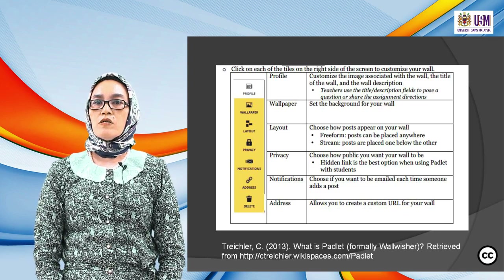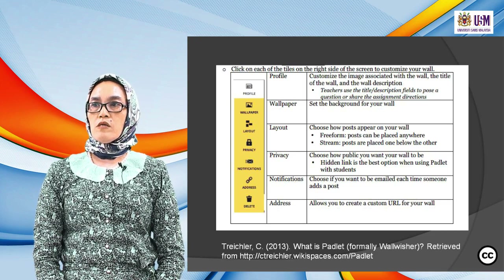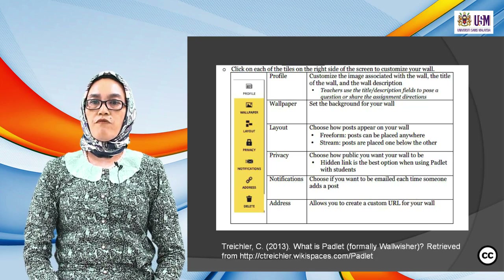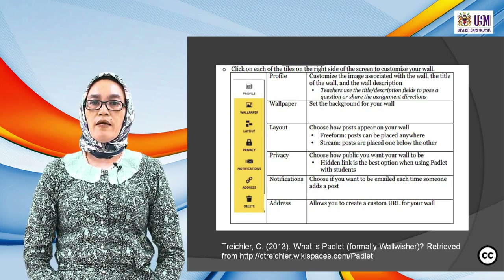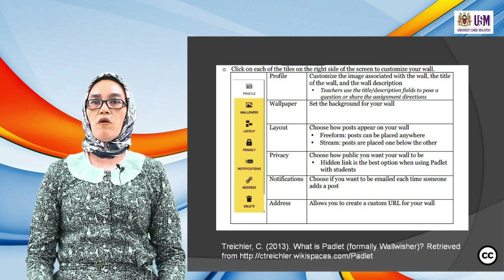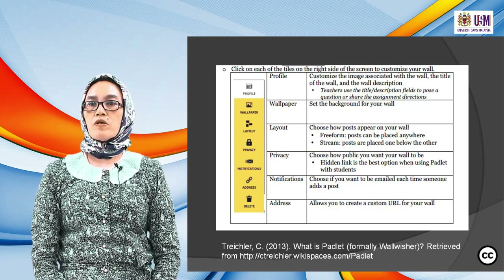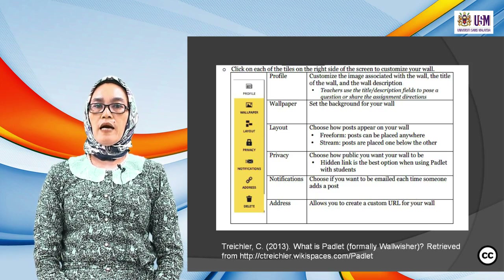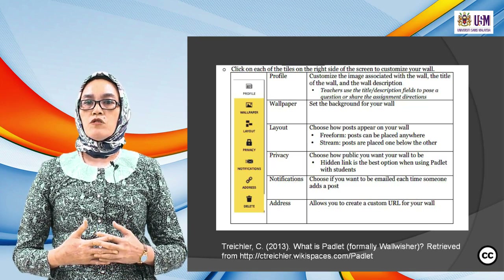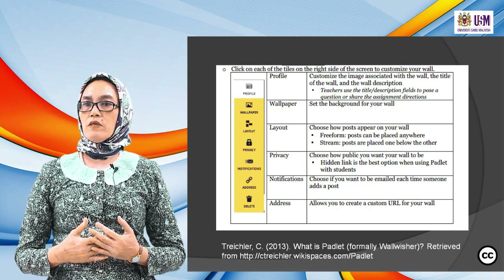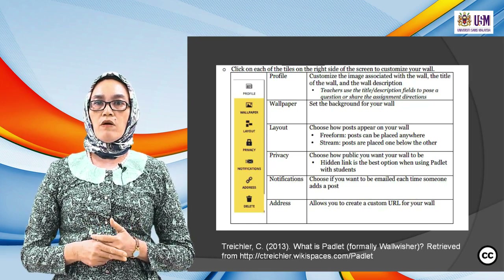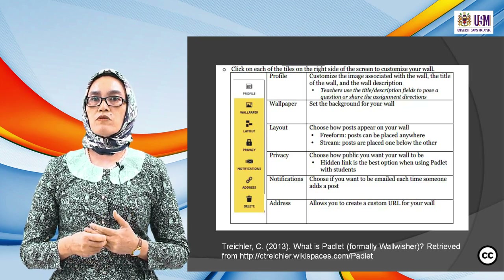For layout, choose how posts appear on your wall — it can be free-form or stream. Free-form means you can put posts anywhere on the wall. Stream means posts are placed one below the other. For privacy, choose how public you want your wall to be — it can be open to everyone, just yourself, or friends only. Hidden link is the best option when using Padlet with students.